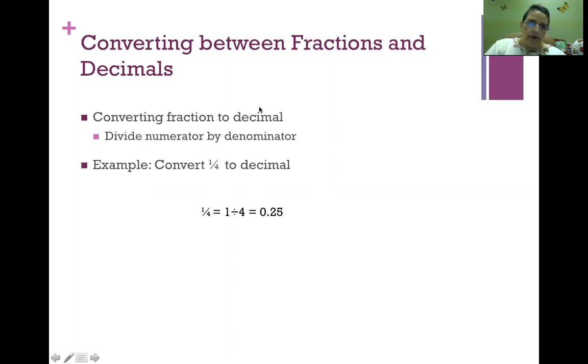When we convert between fractions and decimals, going from a fraction to a decimal is fairly easy. We take the top number, the numerator, and divide by the bottom number, the denominator. So in this case, we would divide 1 by 4, and that equals 0.25.